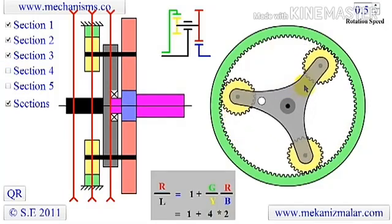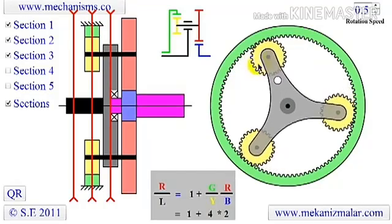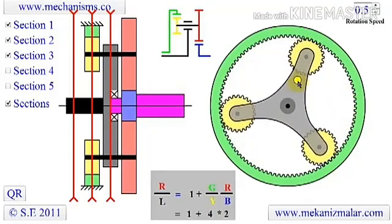The third section shows the carrier arm on which the yellow and red planets are attached. Notice that the input shaft is directly connected to the carrier.